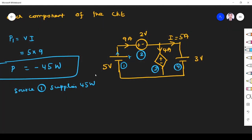What about source 2? Here current enters through positive terminal, so it is absorbing power. So what is P2? P2 is V into I. What is voltage? 2 volt. I is 9 ampere. So it is 18 watts absorbing, so it is plus sign.